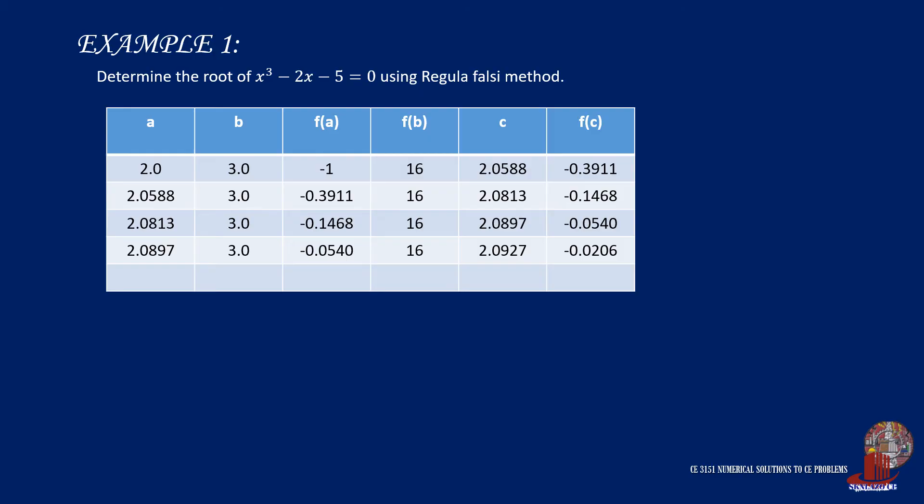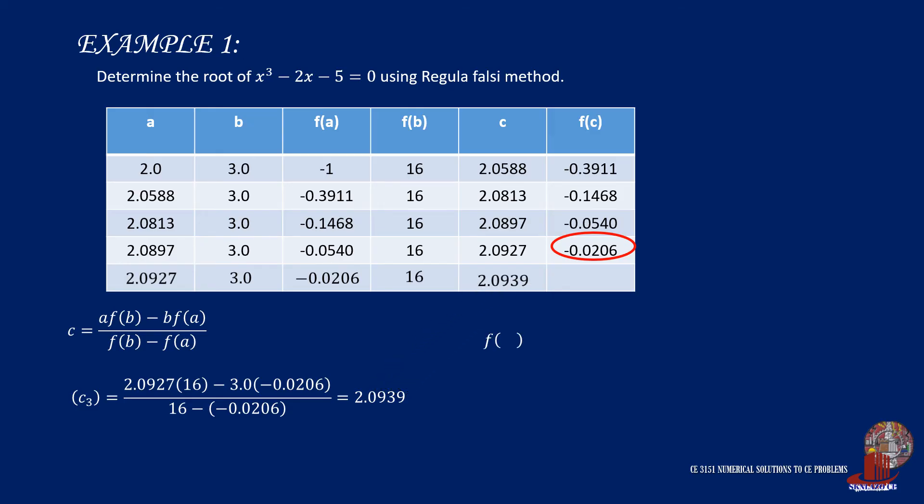So, in continuation, check the last function of c. It gives a negative value, which means that the lower limit is again replaced with the value of c, which is 2.0927. This is followed by the new function of a as -0.0206, whereby b is still 3, and f of b is still 16. Solve for the new value of c from the formula, and after plugging, the value is simplified as 2.0939. Taking the function of c with this fourth iteration shows that the function of c is -0.007269, which is almost 0, so we can stop the iteration and identify the approximate root of x as 2.0939.